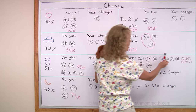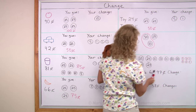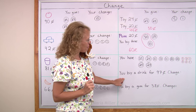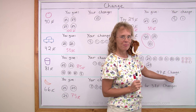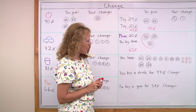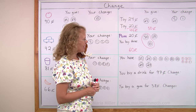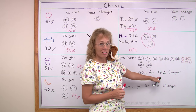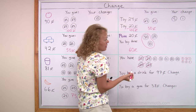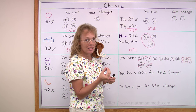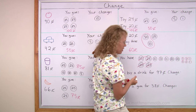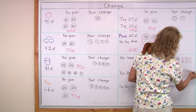Here are the coins you have — you go shopping and those are the coins in your purse. Let's say you buy a drink for 97 cents. What will be your change? 97 cents is very close to 100 cents, so let's say you give four quarters, which makes 100 cents. It costs 97, so the difference between 97 and 100 is 3 — you get three pennies.